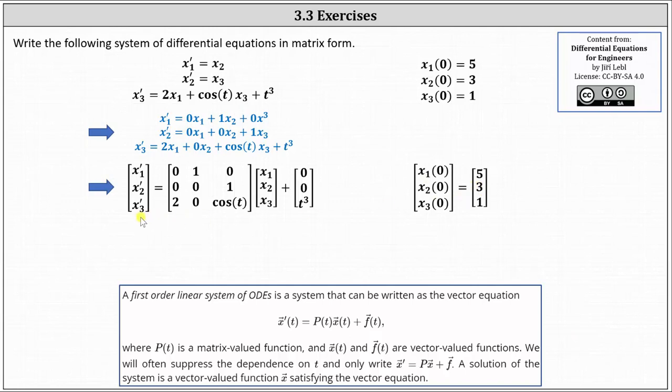We could stop here, but it is more common to replace the vector-valued function with components x1 prime, x2 prime, and x3 prime as just x prime or x prime of t, and also replace the vector-valued function with components x1, x2, and x3 with the vector-valued function x of t or just the vector-valued function x. Similarly, for the initial conditions, because all of the inputs are t equals 0, we can express the left side as the vector-valued function x of 0. I hope you found this helpful.